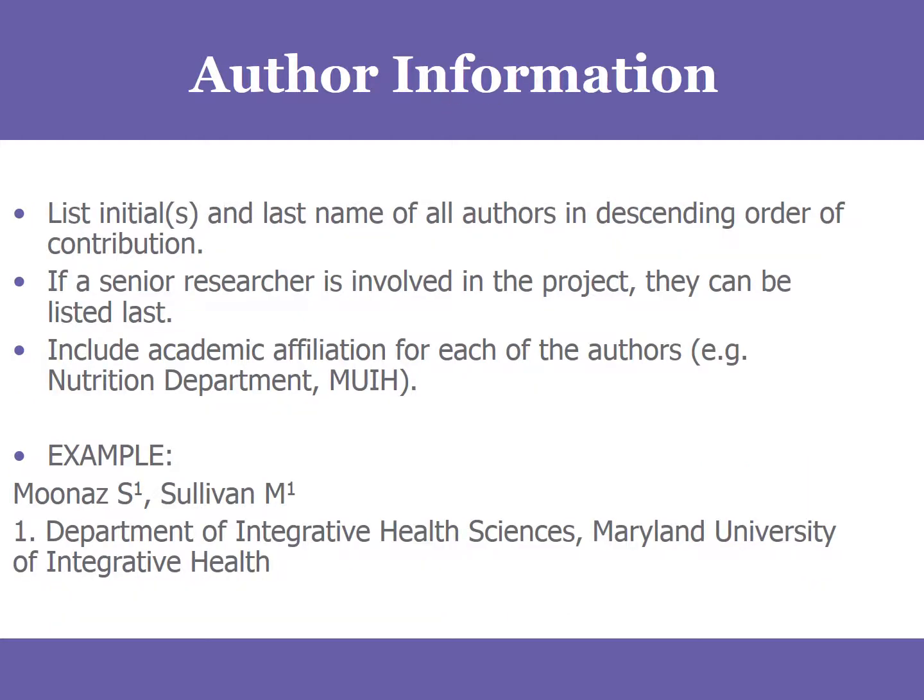Following that is the author information. On our submission site, there are fields to fill in for all of this — you're going to see a place to put each author's name and their department. Include any authors that might be from departments outside of MUIH. You're going to want to list the authors in order of involvement, so the first author should always be the person who has spearheaded the project and been most involved in making it happen, and then it follows in kind.